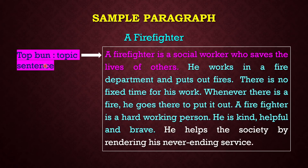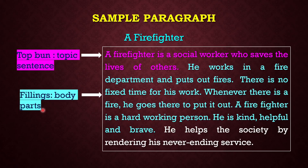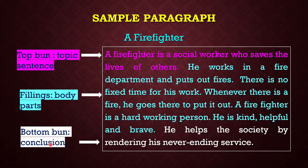At first, the top one or the topic sentence: 'A firefighter is a social worker who saves the lives of others.' This is our topic sentence related to our given topic, a firefighter — this is the introduction. After that, starting from 'He works' to 'brave,' this is the body part of our paragraph where we have covered different points together. And at last, there is the bottom one or the conclusion part: 'He helps the society by rendering his never-ending service.'